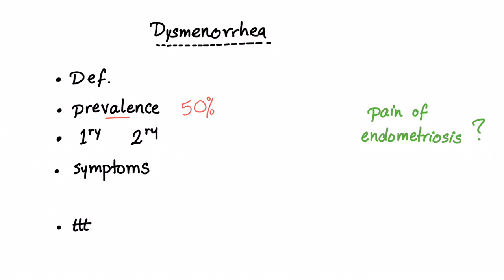Primary versus secondary. Primary is idiopathic — we do not know why. Secondary has some known causes, and that is the focus of today's video.